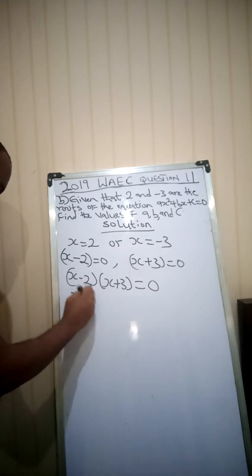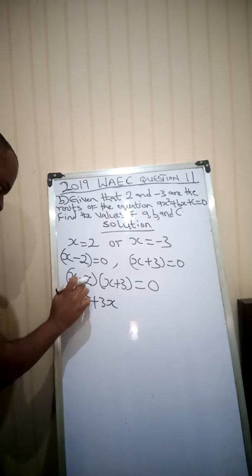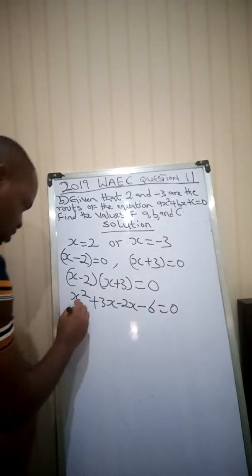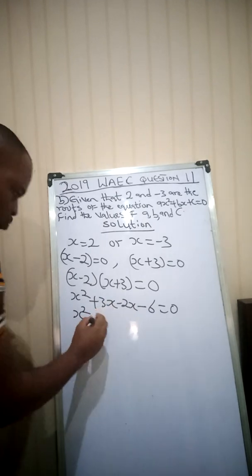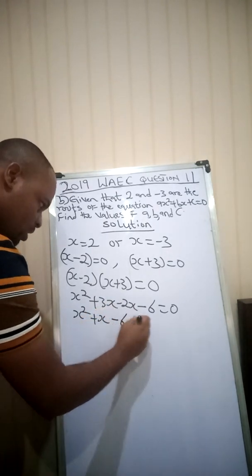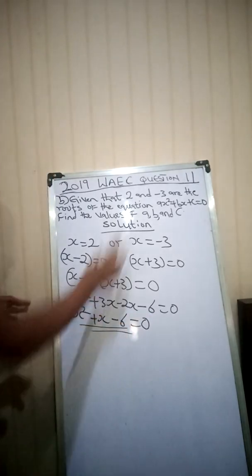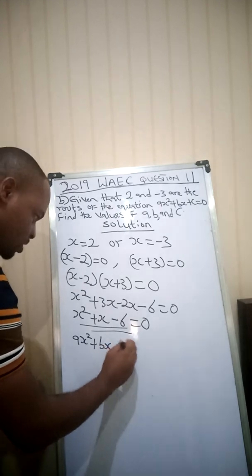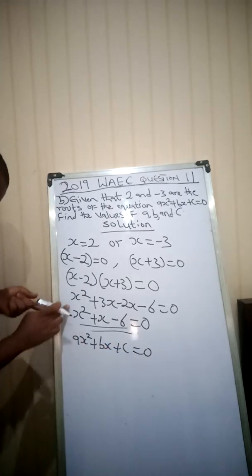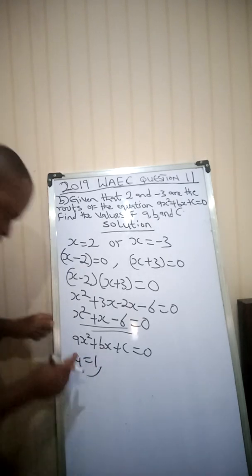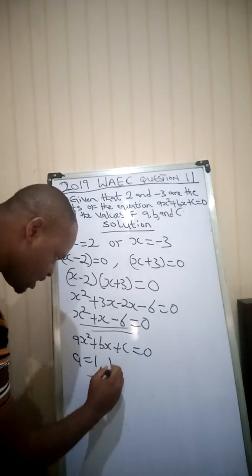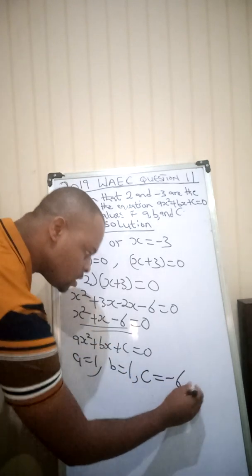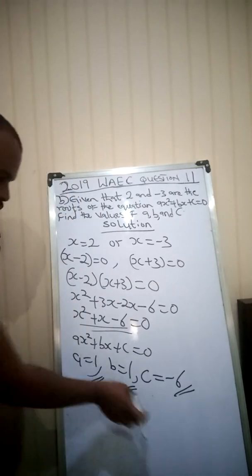Expanding the bracket: x × x = x², x × 3 = +3x, -2 × x = -2x, and -2 × 3 = -6. So we have x² + 3x - 2x - 6 = 0, which simplifies to x² + x - 6 = 0. Relating to ax² + bx + c = 0: the coefficient of x² is 1, so a = 1; the coefficient of x is 1, so b = 1; and the constant is -6, so c = -6.